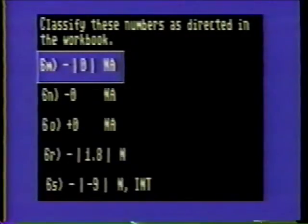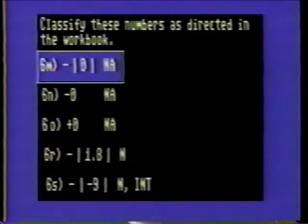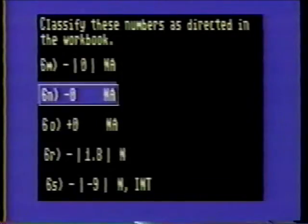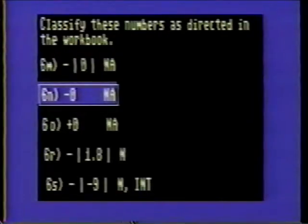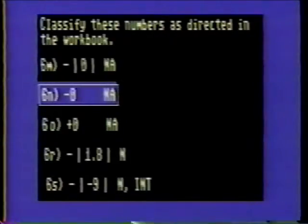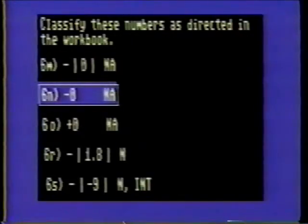Problem 6N: Minus the absolute value of 0 is minus 0, which is an incorrect representation of 0. The answer is none of the above. Minus 0 is an incorrect representation of 0 when 0 stands alone — it incorrectly identifies 0 as a negative number. As previously stated, 0 is neither positive nor negative. The solution is none of the above.